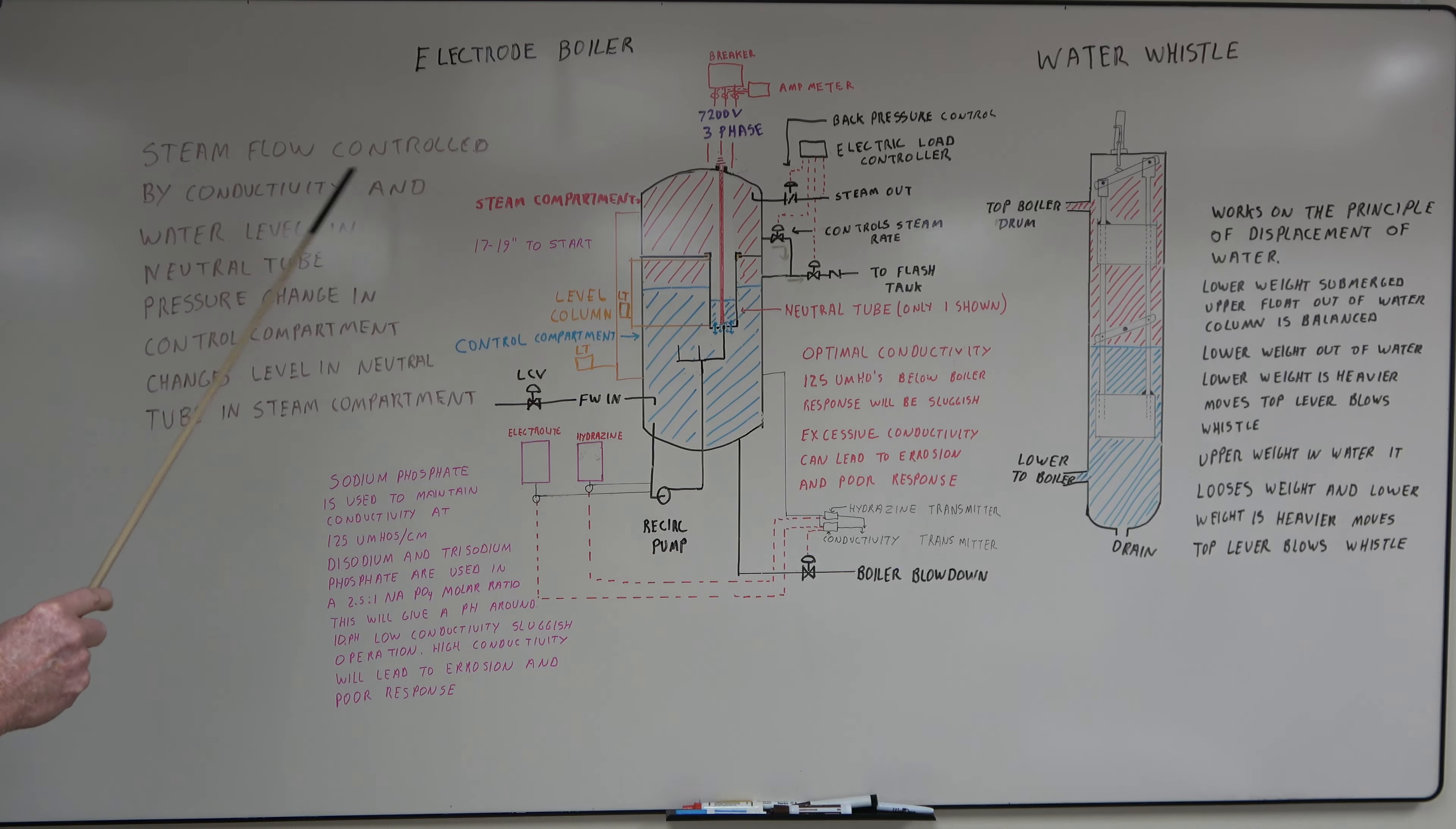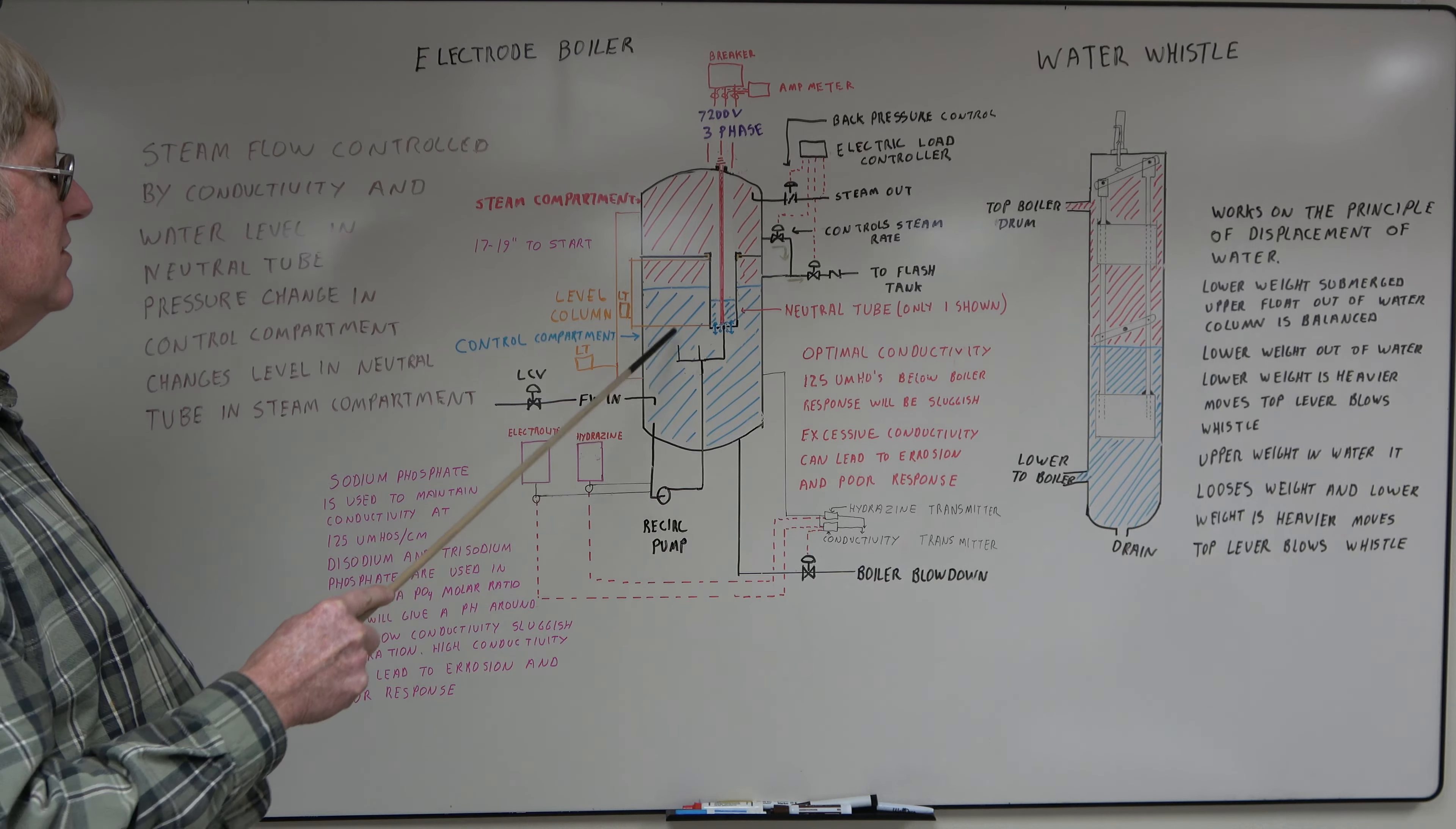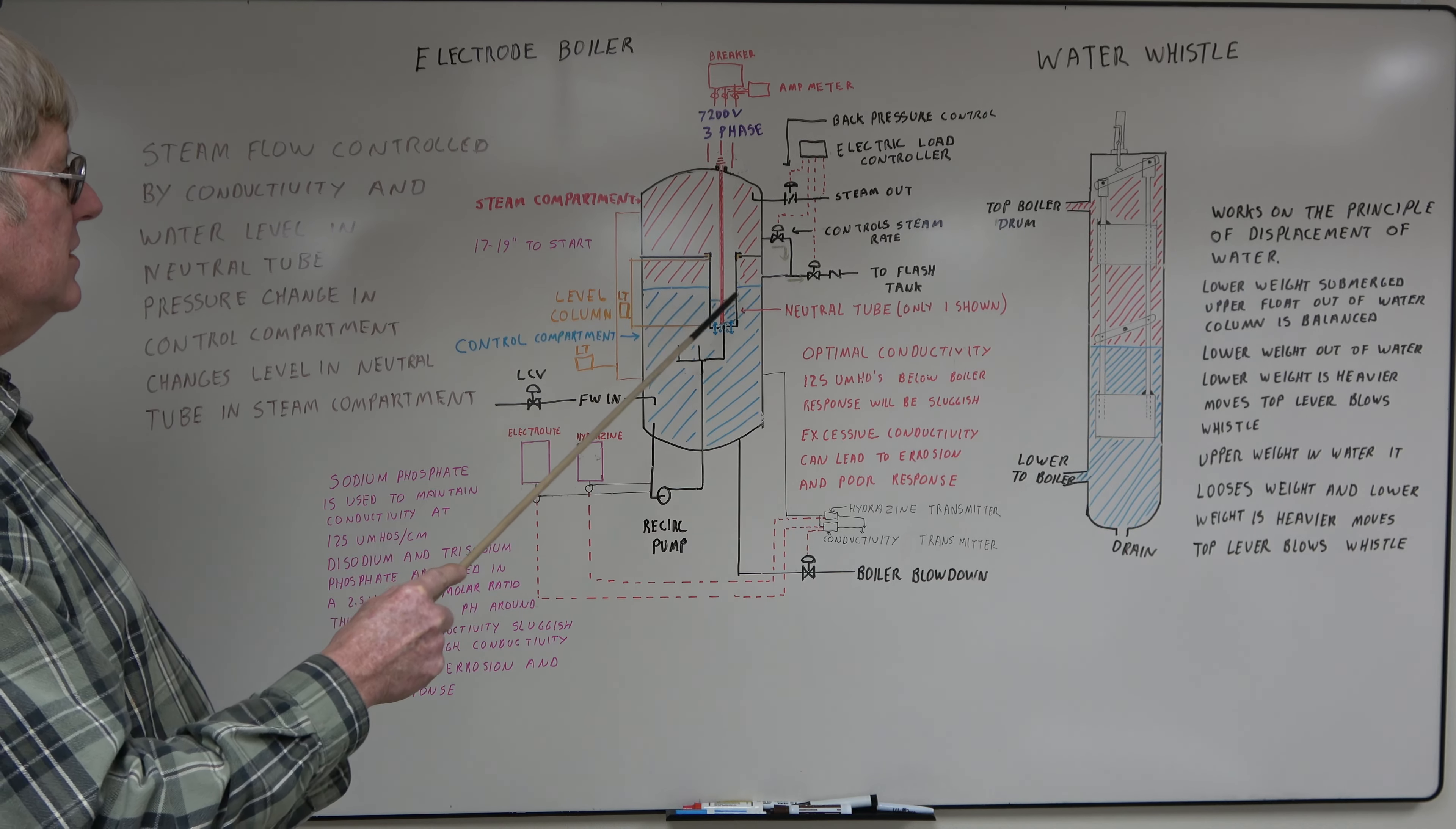The steam flow is controlled by conductivity and water level in the neutral tube. It's a neutral tube. Pressure changes in the control compartment changes level in the neutral tube in the steam compartment. So the whole principle of operation is the conductivity of the water and the level in here.